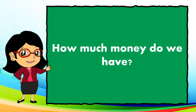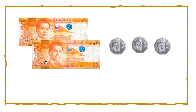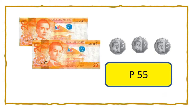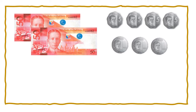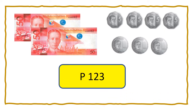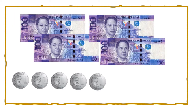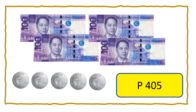It's your turn. Count the amount of money shown in each set. How much money do we have? If you have 2 twenty-peso bills and 3 five-peso coins, how much money do you have? We have 55 pesos. If you have 2 fifty-peso bills, 4 five-peso coins, and 3 one-peso coins, how much do you have? You have 123 pesos. How about this one? You have 4 one-hundred-peso bills and 5 one-peso coins. You have 405 pesos.